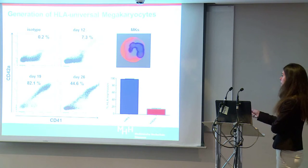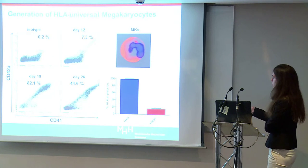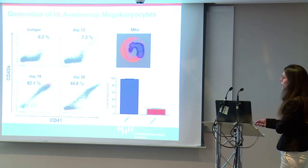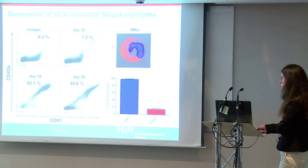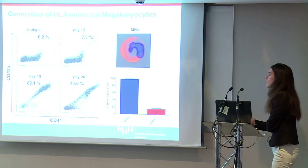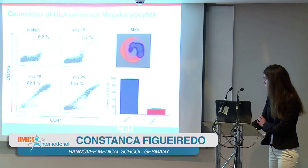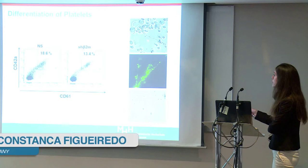We differentiated the HLA-silenced iPS cells into megakaryocytes and were able to generate polyploid megakaryocytes displaying the typical megakaryocyte phenotype — expressing CD42A and CD41 — with a peak of differentiation by day 19. These megakaryocytes were silenced for HLA class 1 expression.